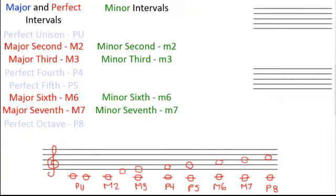Let's look at an example of how major intervals can be made smaller by a semitone to become minor intervals. Right now we are looking at a series of intervals within C major. We are going from the first note of the C major scale, a C, to each subsequent note in the scale, creating perfect and major intervals as we go. So, what we want to do now is lower the top note by a semitone to make these intervals minor.